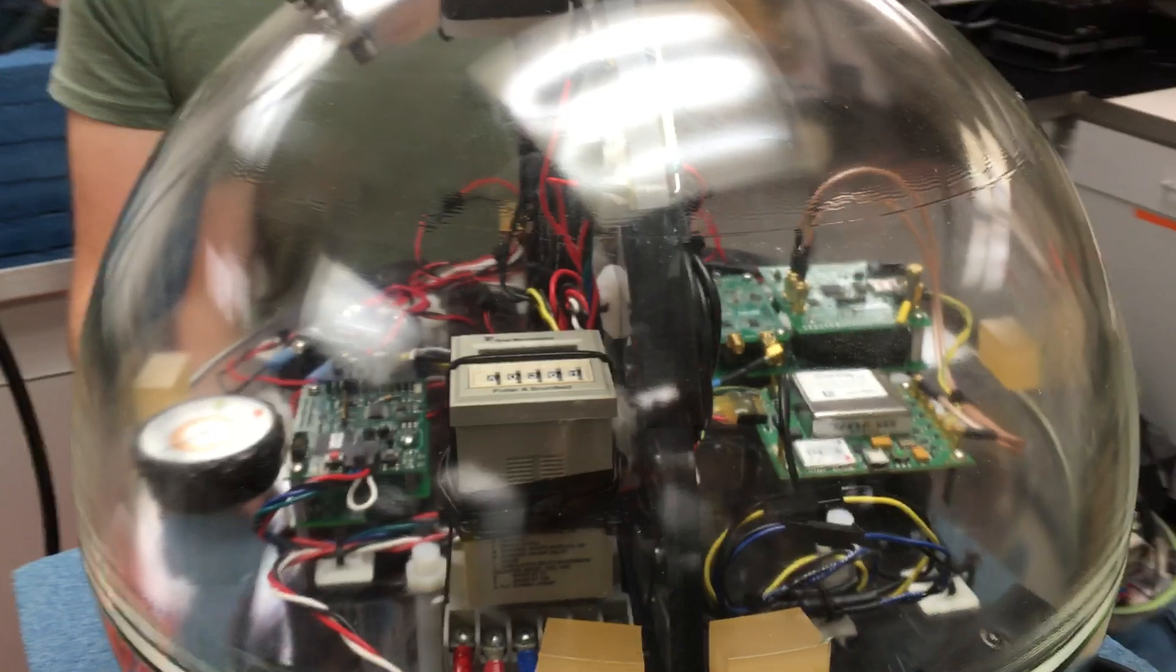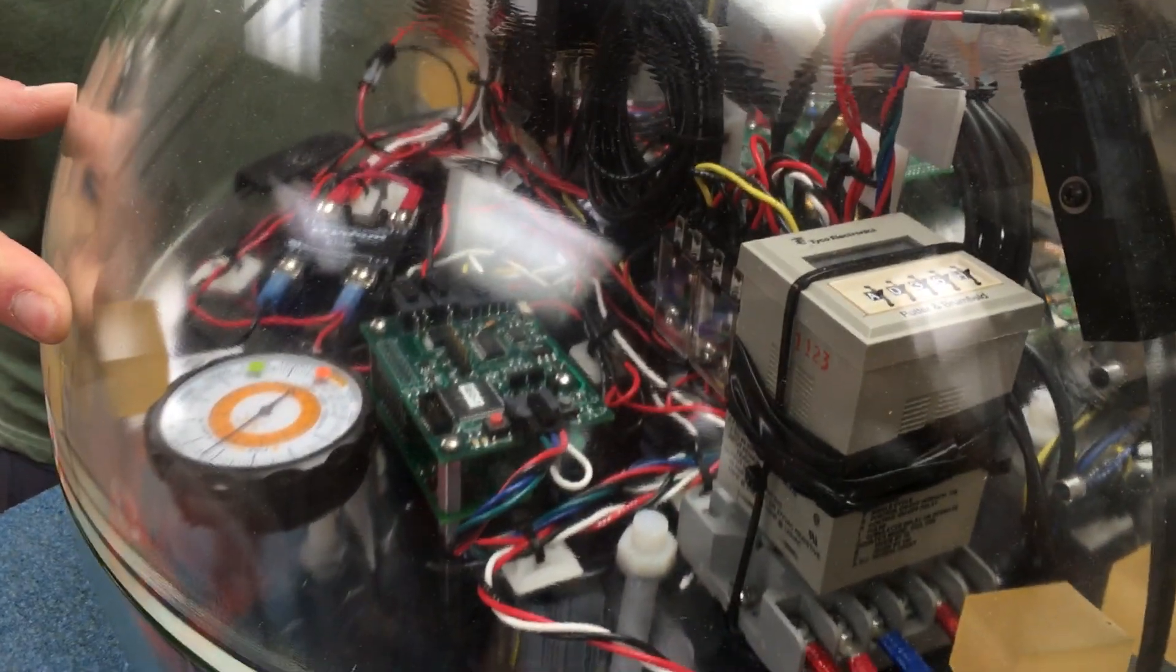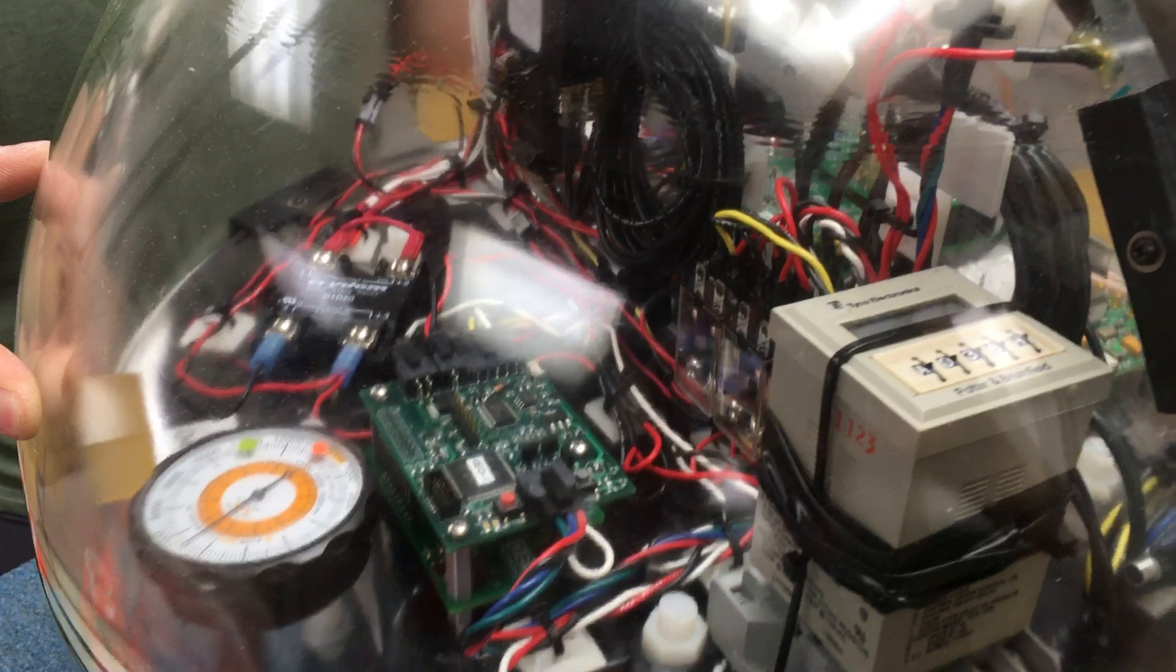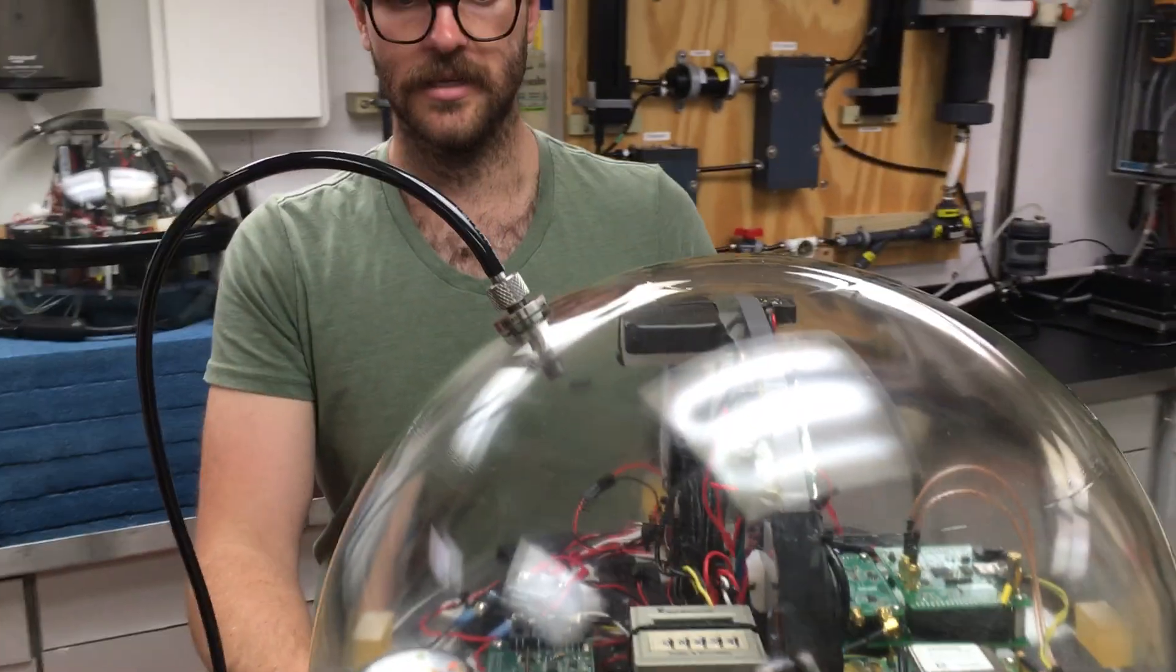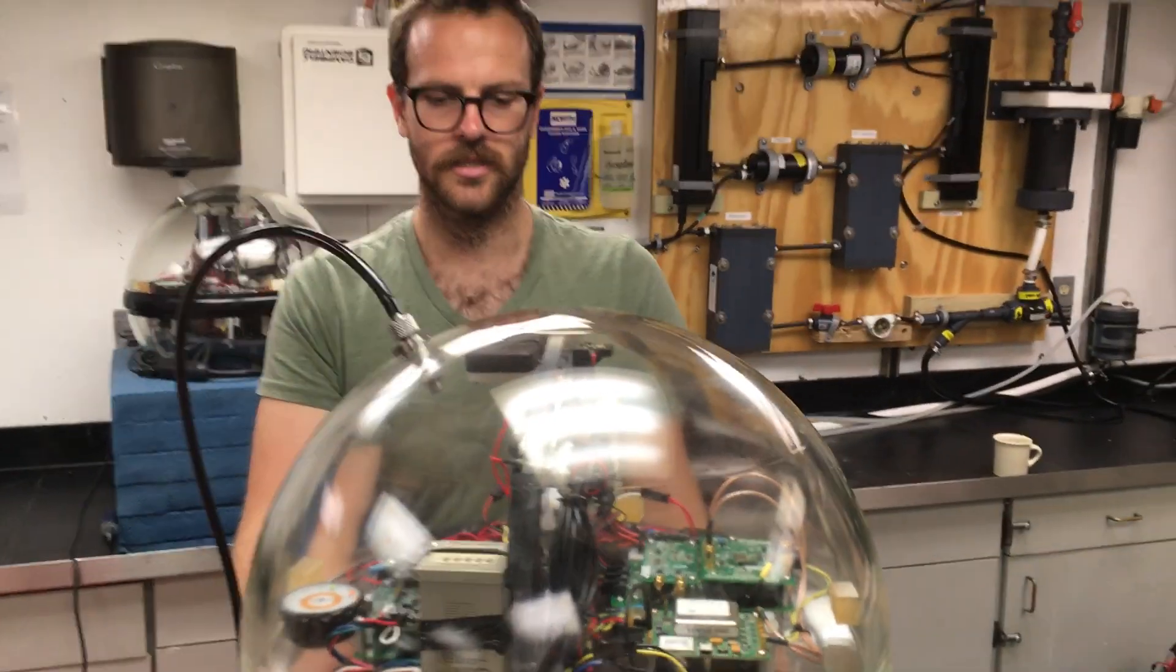We're pulling a vacuum on it and on this we have an altimeter which we're using as our vacuum gauge, and we're going to probably pull around 10 inches of mercury on it to start with.